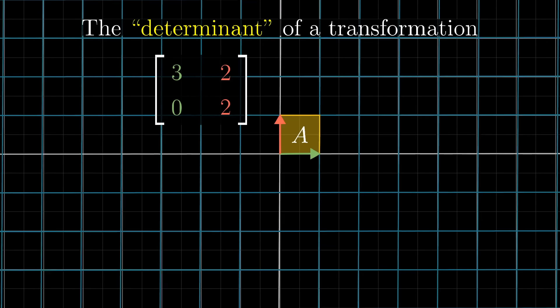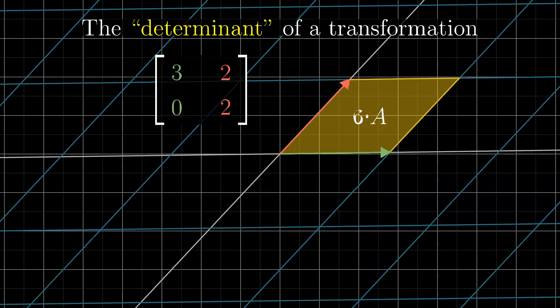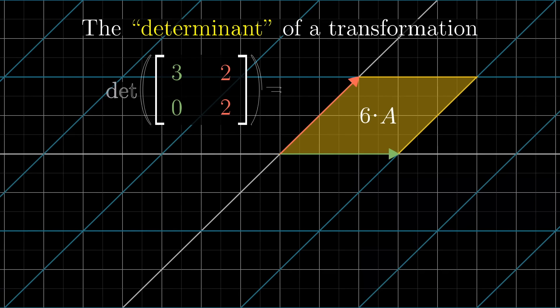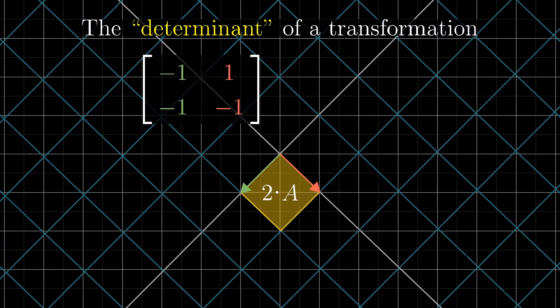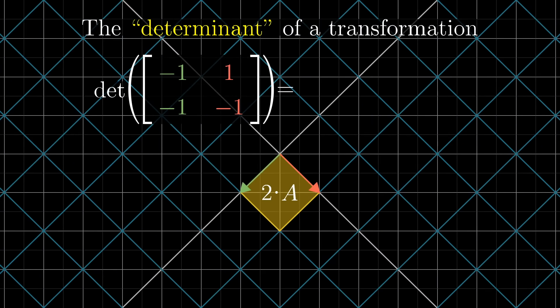This very special scaling factor, the factor by which a linear transformation changes any area, is called the determinant of that transformation. I'll show how to compute the determinant of a transformation using its matrix later on in this video. But understanding what it represents is, trust me, much more important than the computation.